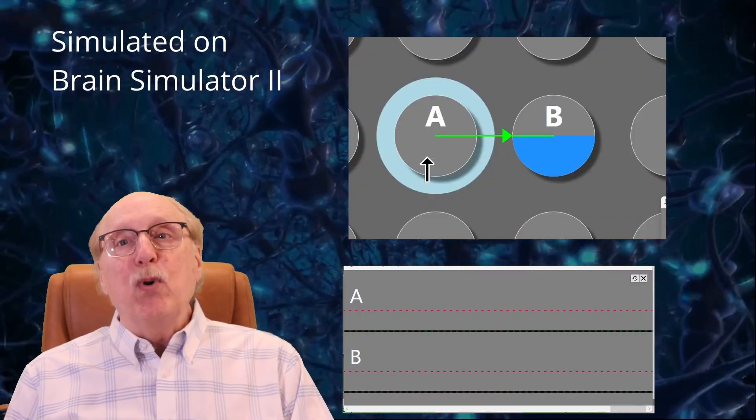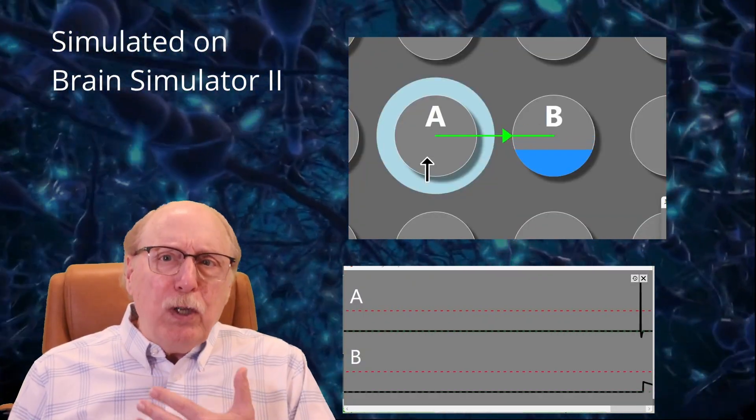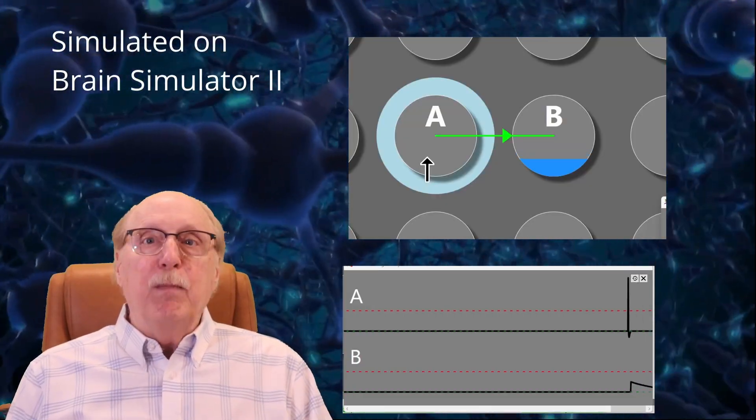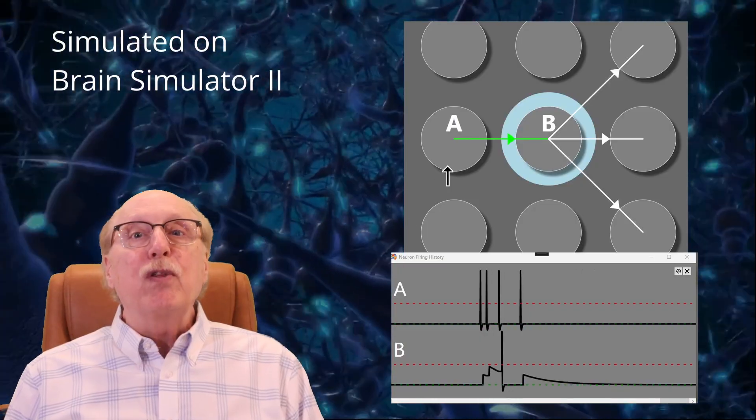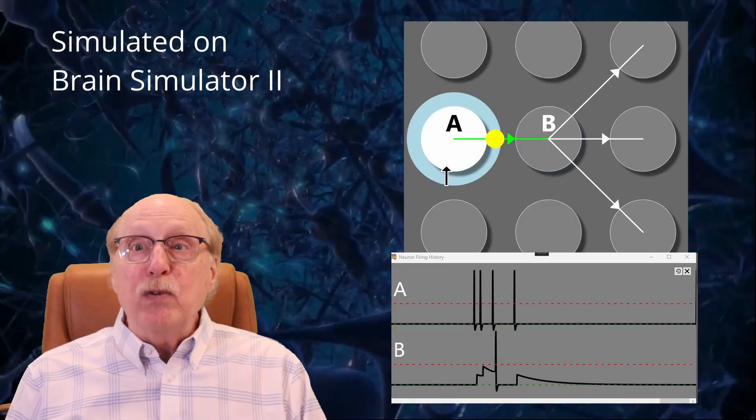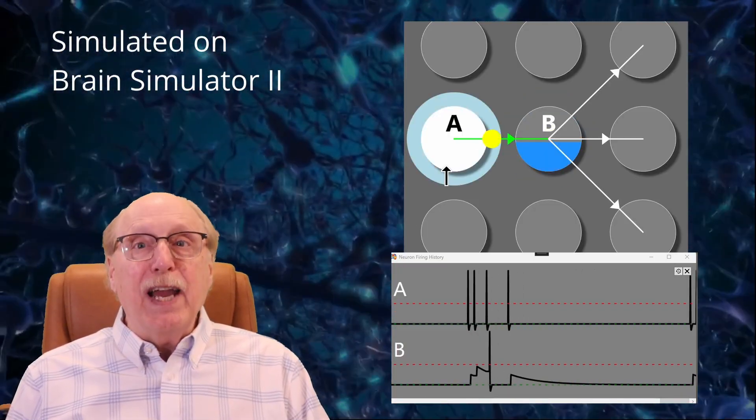Without any more input, this activation level will just leak away. But if enough signals arrive close together, the neuron reaches a threshold and fires an electrical spike, also called an action potential.